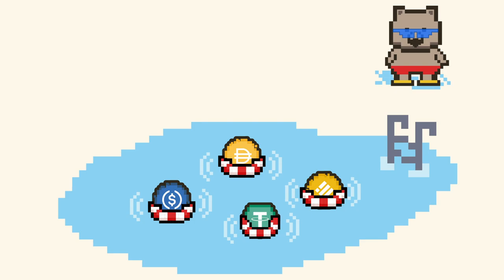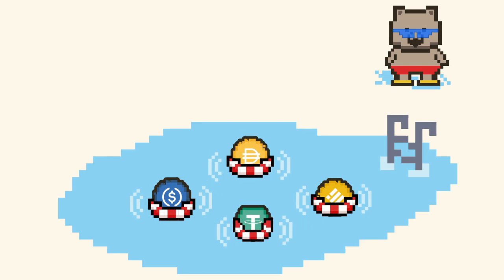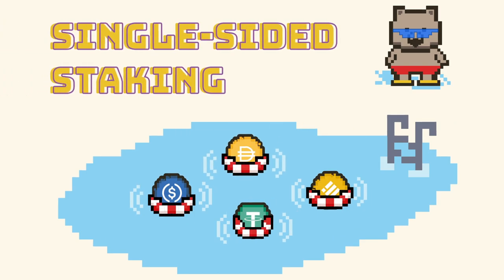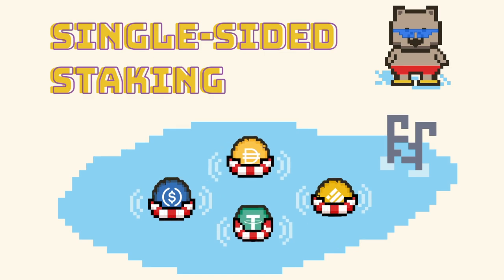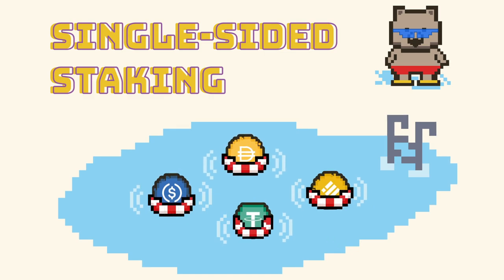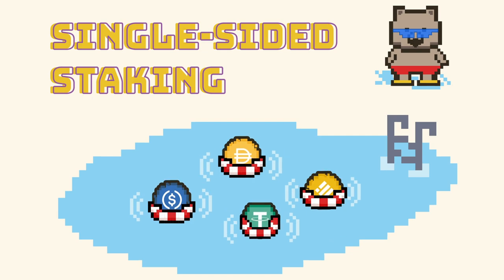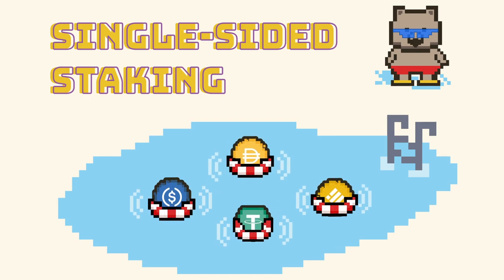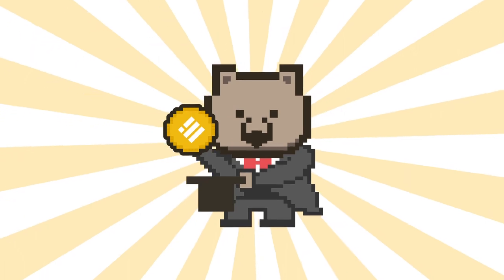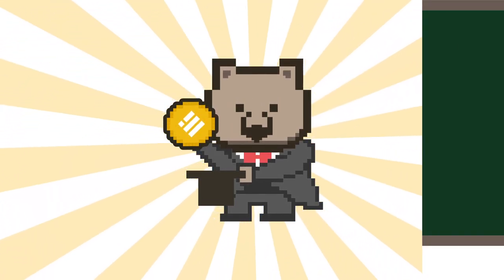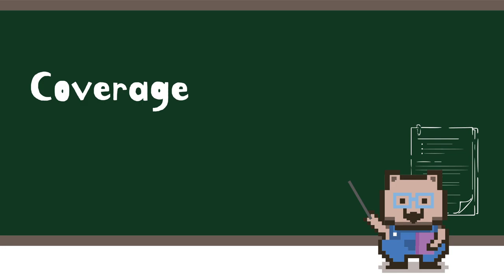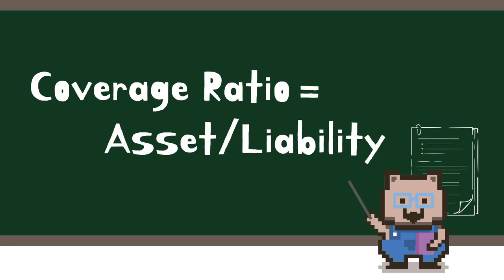Unlike other DEXs on the market, Wombat offers single-sided staking, thanks to our unique liquidity pool mechanism. All tokens accepted on Wombat Exchange are listed here as individual liquidity pools instead of the typical token pairs. We will use BUSD as the example in this video. Coverage ratio refers to the amount of BUSD tokens in Wombat's liquidity pool divided by the amount of BUSD swept